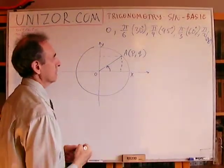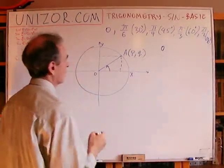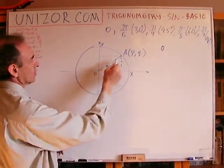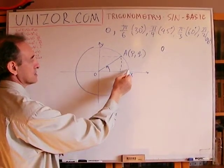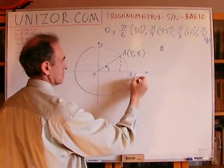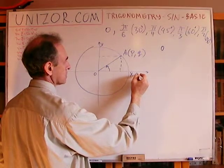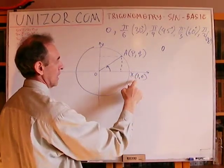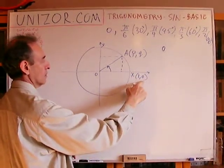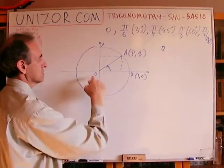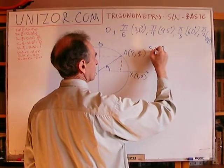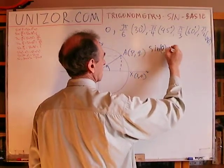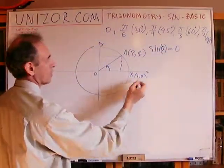Now, in case 0, well, if this angle is 0, then A coincides with X, which means this position has coordinates 1, 0. So in this particular case, obviously, the sine is equal to 0 because the ordinate is 0.